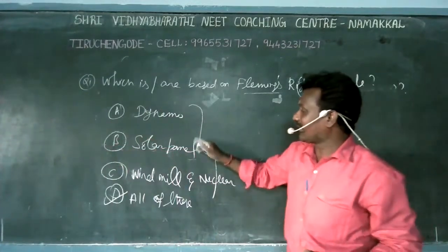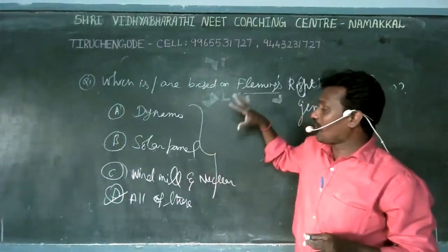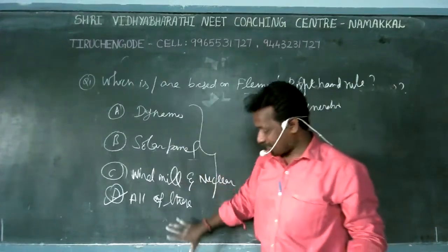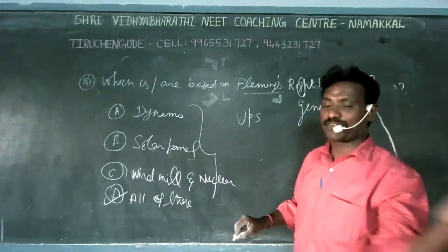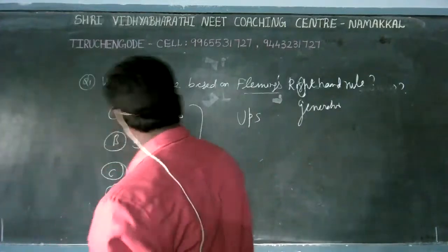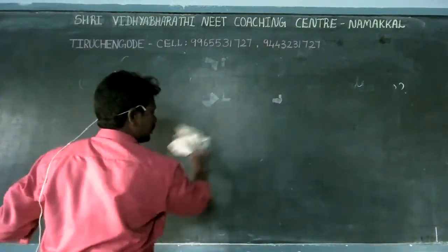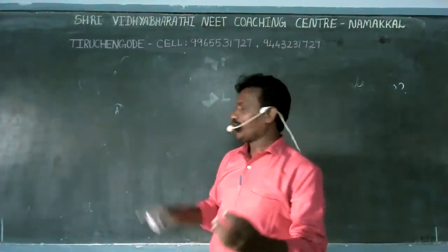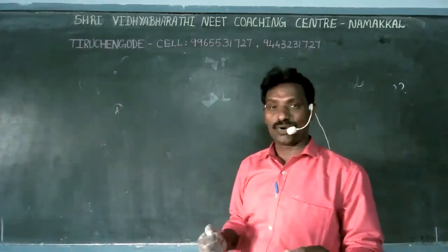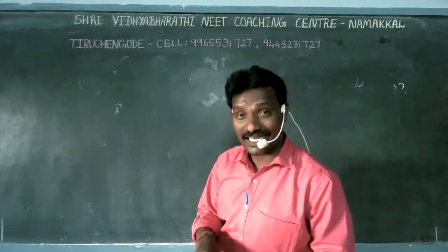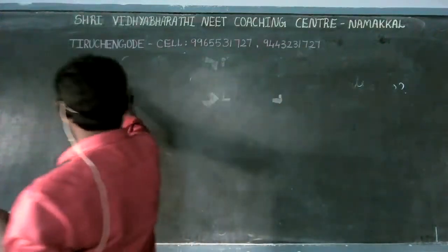All of these generate current — diesel generators also produce current. The majority of electrical appliances belong to Fleming's left-hand rule; the minority of electrical instruments belong to Fleming's right-hand rule. Solar panel, cycle dynamo, nuclear reactor are all RHR-based. Also, physics laboratory cells like the Daniel cell, Leclanche cell, and batteries — these all generate current and are based on Fleming's right-hand rule.